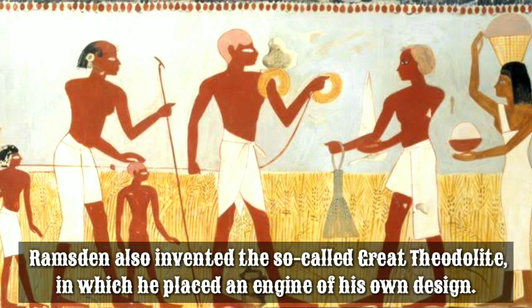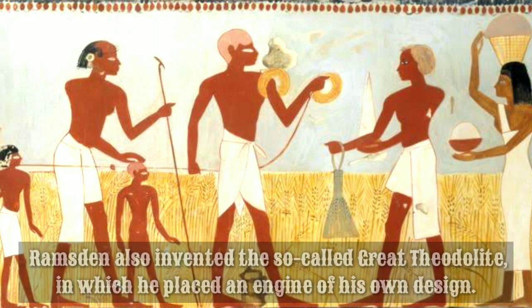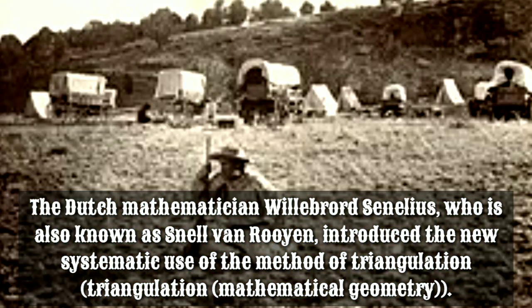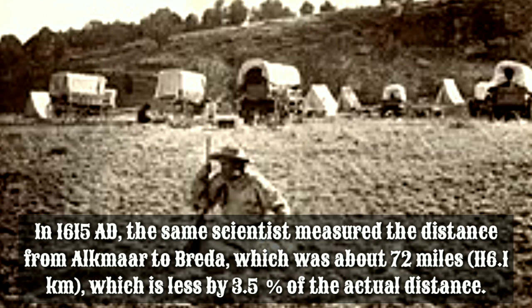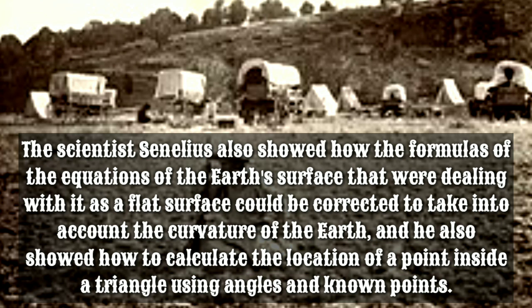Ramsden also invented the so-called Great Theodolite, in which he placed an engine of his own design. The Dutch mathematician Willebrord Snellius, also known as Snell van Royen, introduced the new systematic use of the method of triangulation in mathematical geometry. In 1615 AD, the same scientist measured the distance from Alkmaar to Breda, which was about 72 miles or 116.1 kilometers, a result less than 3.5% of the actual distance. Snellius also showed how formulas dealing with the Earth's surface as a flat surface could be corrected to account for the curvature of the Earth, and how to calculate the location of a point inside a triangle using angles and known points.